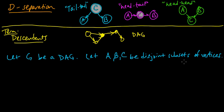So we have these subsets of vertices. For example, in this little graph, A could be those two nodes, B might be this one, and C might be this one — and some nodes might not be represented in A, B, or C at all. They're just disjoint subsets, but not necessarily covering the whole graph. The union of A, B, and C is not necessarily all of the vertices of G.